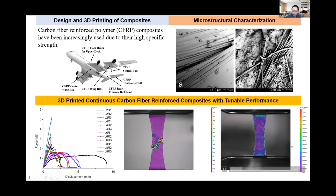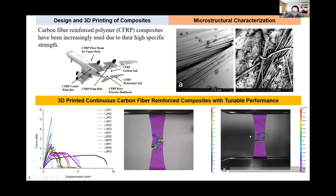For the second video, this is a different composite design. This sample fails in a much shorter time due to catastrophic failure — the crack initiated and the part failed almost right away. This sample corresponds to the green curve, exhibiting pretty high strength but very low ductility. SEM images show the continuous carbon fiber at the fractured surface.